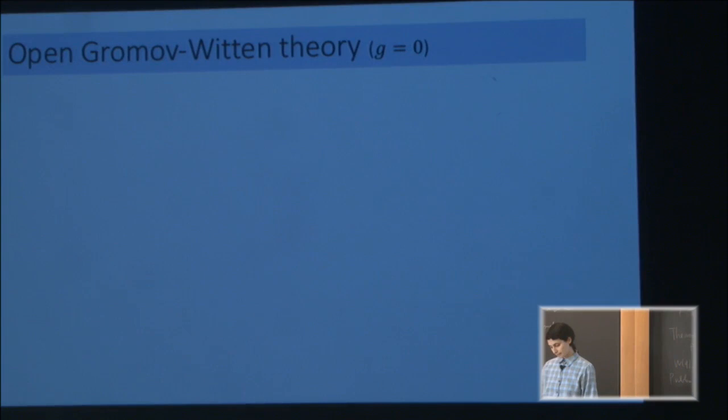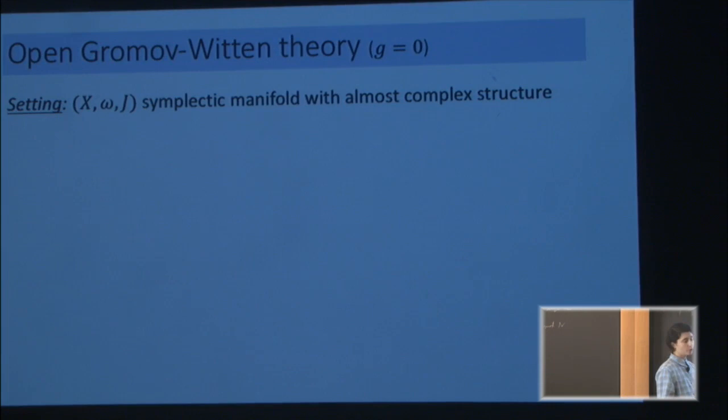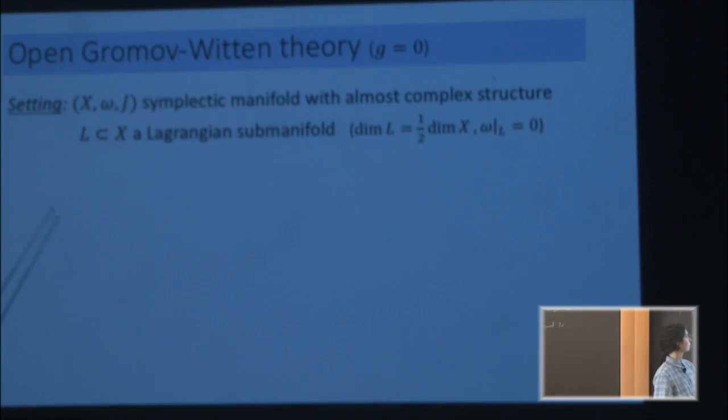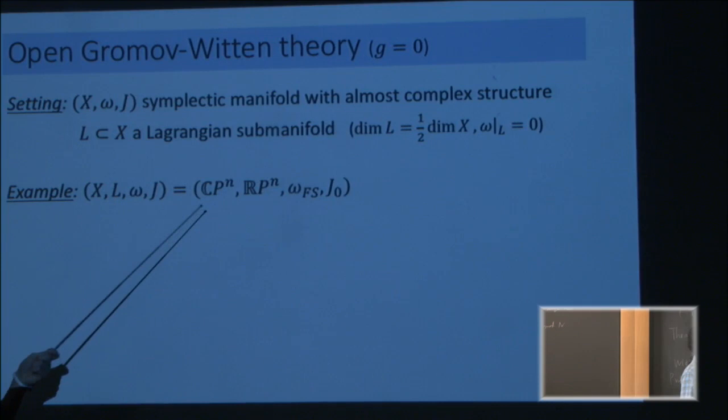Open Gromov-Witten theory is open in the sense that it's not closed. Our domain used to be a sphere, which is a closed Riemann surface. Now it's going to be an open Riemann surface, still of genus zero, so a disk. We still have a symplectic manifold; we are going to have boundaries, so we need boundary conditions. We pick a Lagrangian submanifold — a submanifold of half the dimension that interacts well with omega. The main example is the real projective space inside the complex projective space with the standard structures.